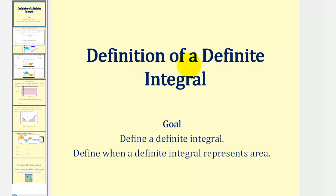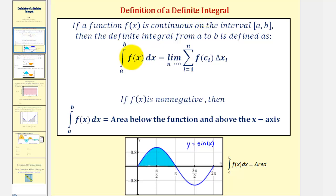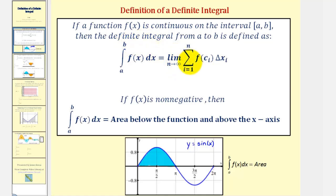Welcome to a lesson on the definition of a definite integral. A definite integral is given using this notation, where if a function f of x is continuous on the closed interval from a to b, then the definite integral of f of x integrated with respect to x from a to b is defined as the limit, as n approaches infinity, of the sum of these products.